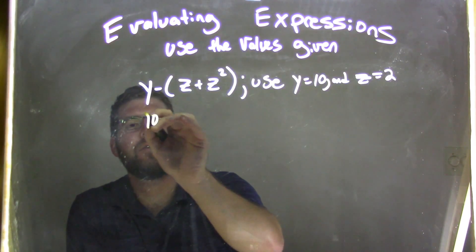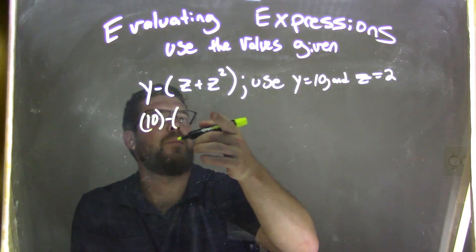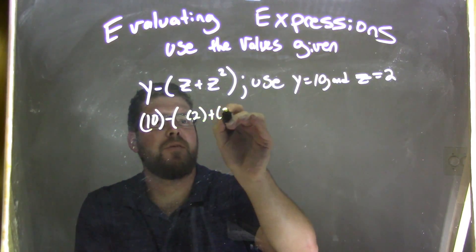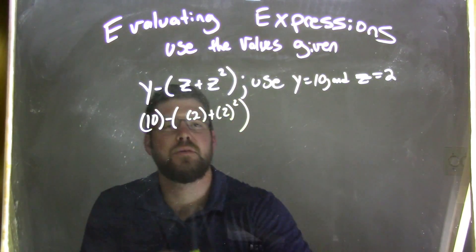So we have the y out here, the 10 first, subtracted by, inside the parentheses, 2 is our z plus 2 to the second power. There we go.